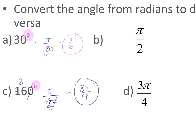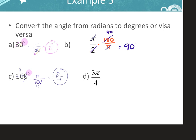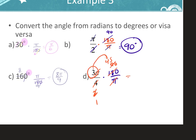For part b, it's already in radians, so multiply times 180 over pi. The pis cancel, 2 goes into 180 ninety times, giving 90 degrees. For part d, multiply by 180 over pi — pis cancel, simplify 4 and 180 step by step to get 3 times 45 — which gives 135 degrees.